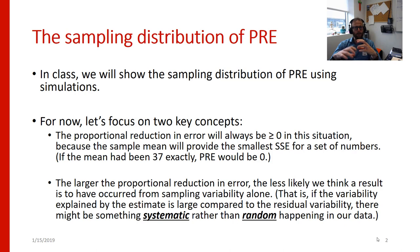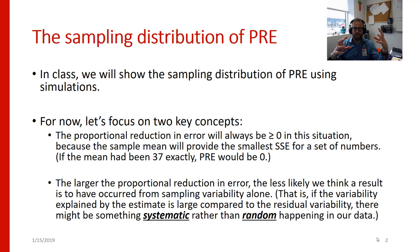The other thing we want to keep in mind is that the larger the proportional reduction in error, the less likely we think a result is to have occurred by sampling variability alone, given certain assumptions of our distributions. If the variability explained by our estimate is large compared to the residual variability, we think there's something systematic and therefore statistically interesting happening in our data, rather than something random happening in our data.